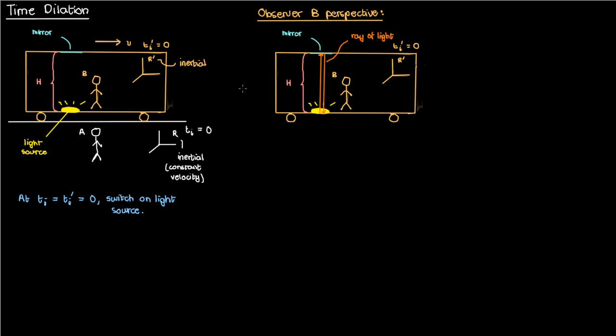According to observer B, the speed of the light ray is c. The distance the light ray travels is 2h because it goes 1h up and then 1h down. Therefore the time taken by the light ray to go up and come back down is delta_t0 = 2h/c. I'll call this Equation 1.